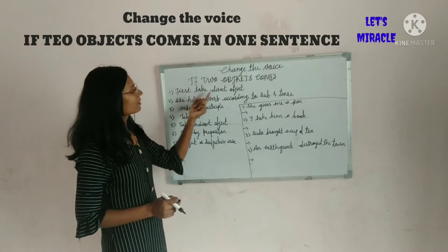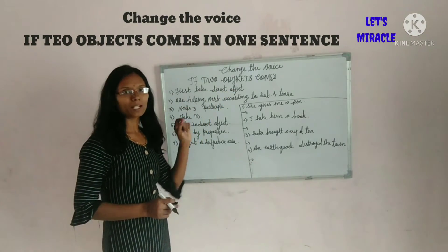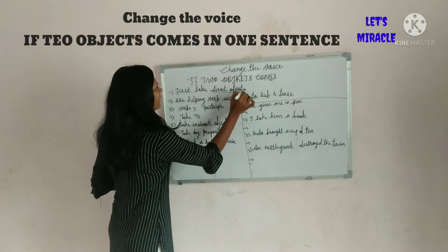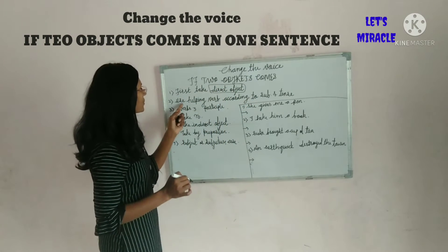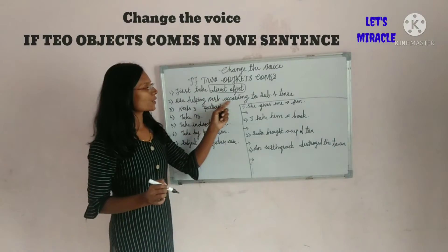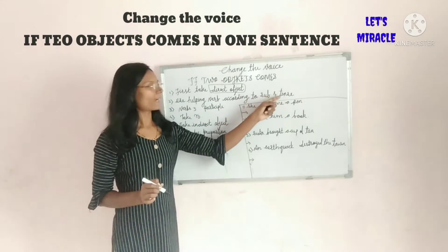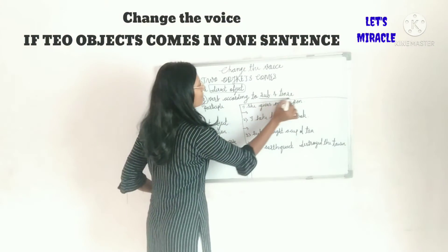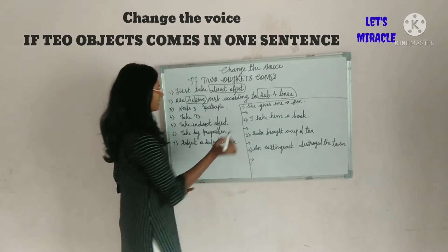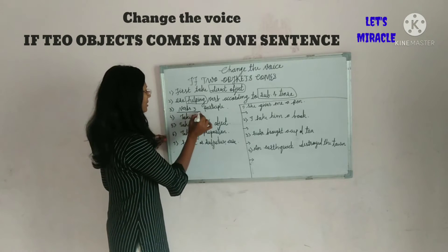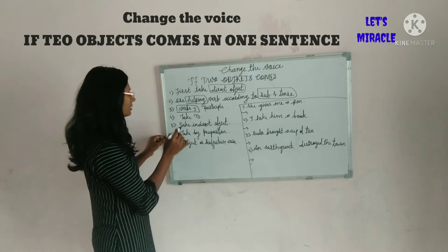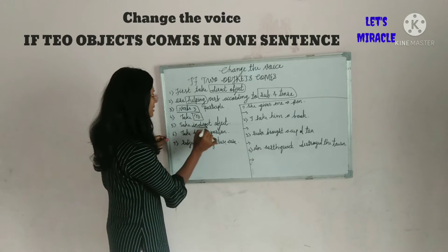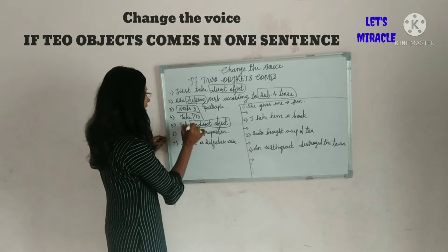First, take the direct object. Use the helping verb according to the subject and tense. Then take the verb's third participle. Then take 'to'.